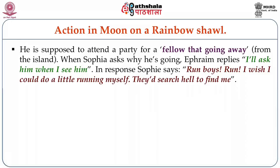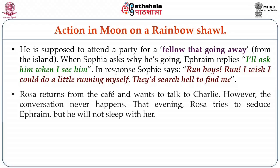When Sophia asks why he is going, Ephraim replies, 'I will ask him when I see him.' Sophia responds, 'Run boys, run. I wish I could do a little running myself. They'd search hell to find me.' Rosa returns from the café and wants to talk to Charlie, but the conversation never happens. That evening, Rosa tries to seduce Ephraim but he will not sleep with her.